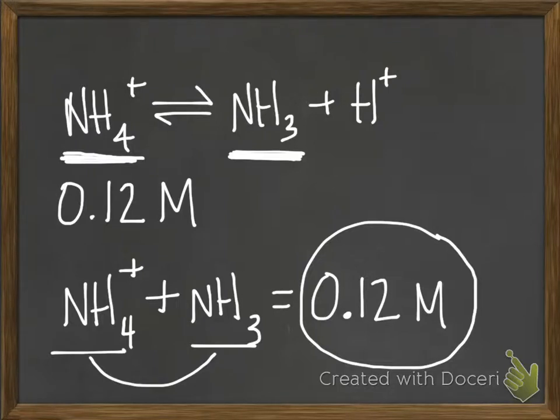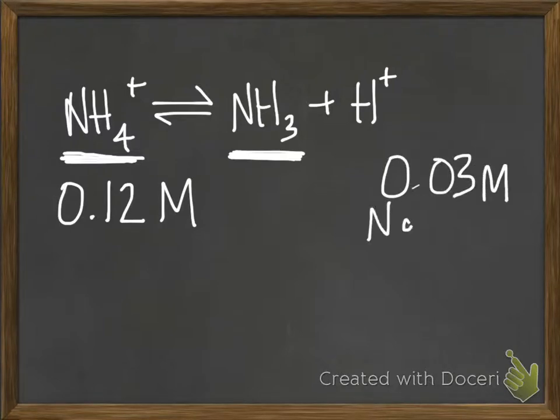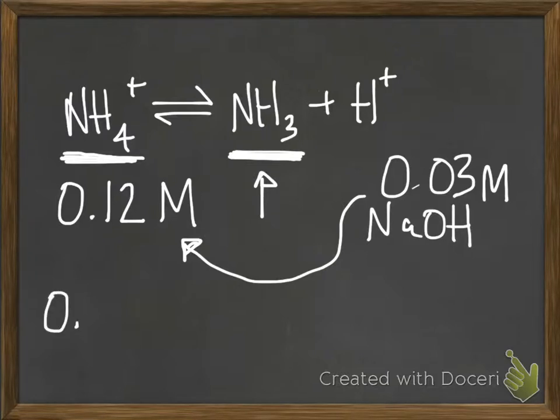So 0.03 moles per liter of sodium hydroxide were added. That means that much reacted with NH4+ to produce NH3. So 0.03 moles per liter of NH3 got produced.